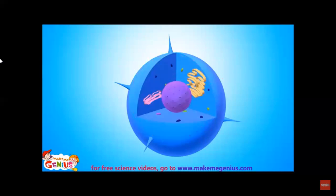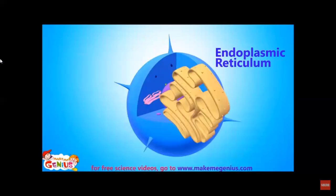There is another important organelle called endoplasmic reticulum, which is a network of tube-like structures found throughout the cytoplasm. Its outer surface is either smooth or rough. The rough surface has other organelles called ribosomes. These make it rough.